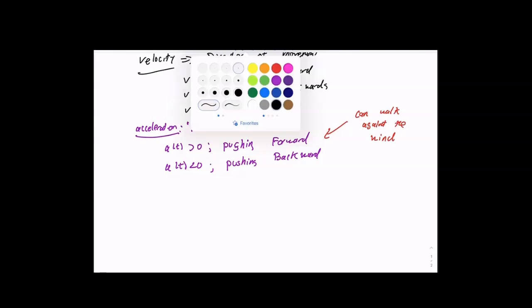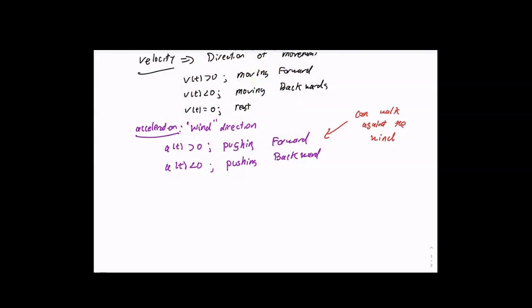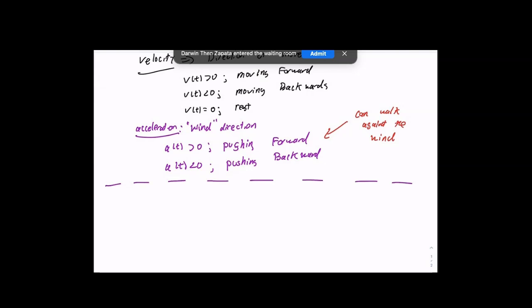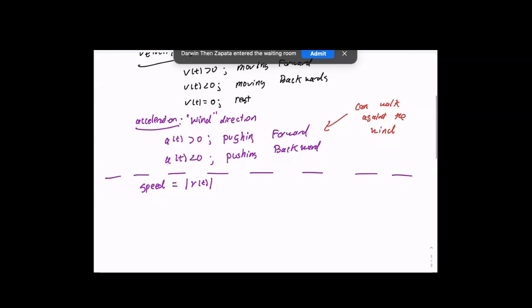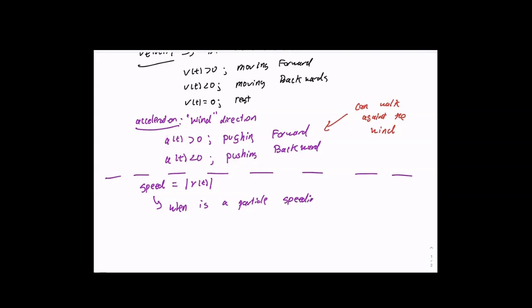We noted that speed is the absolute value of velocity. One of the major concepts we have is the idea of speed, and more importantly, we are going to be asking: when is a particle speeding up versus slowing down?